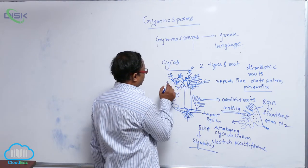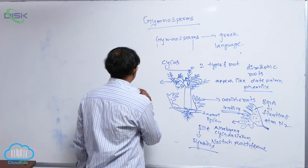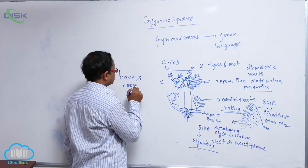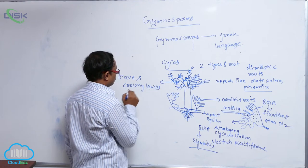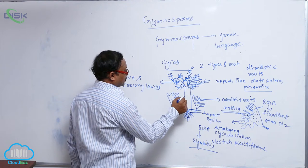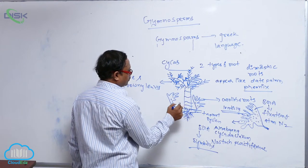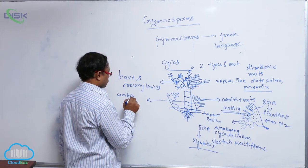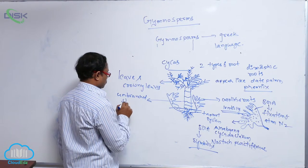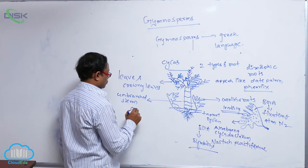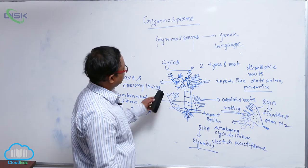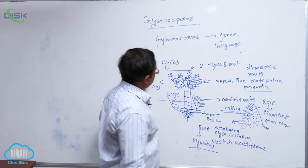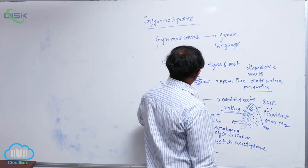In Cycas, the leaves are crown-like leaves on an unbranched stem. This unbranched stem is known as a caudex.